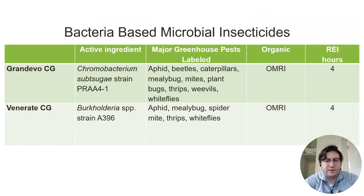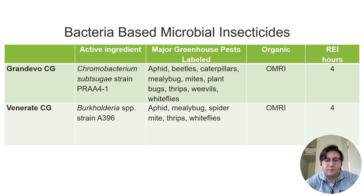There are a variety of bacterial-based pesticides on the market. Bacillus, which is a bacterium, can be commonly found in both fungicides and insecticides. Grandivo and Venerate are two other effective bacterial-based insecticides that help manage a wide range of insects. They are both OMRI-listed and both have an REI of four hours. If you have any questions regarding product rates for any of the products listed here and others, don't hesitate to reach out to GGS Pro.